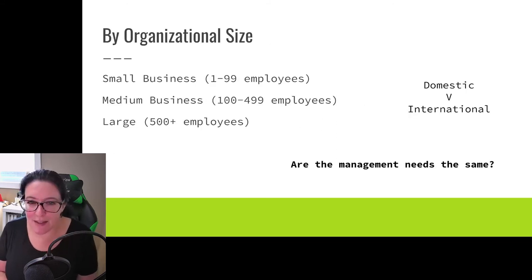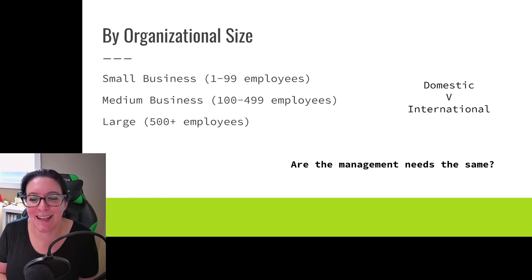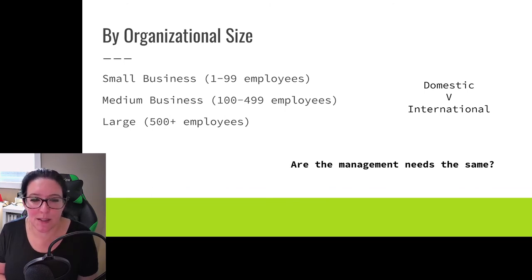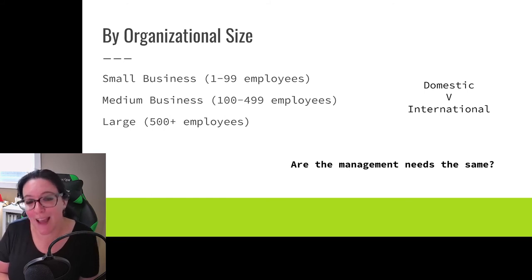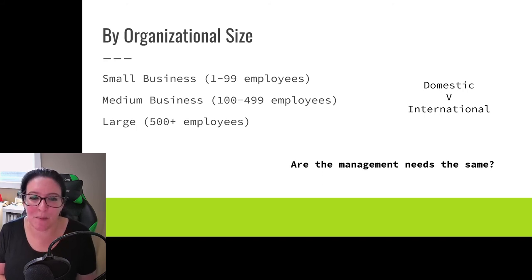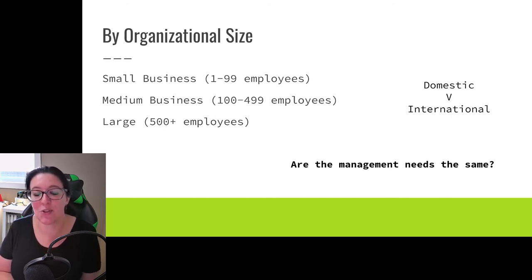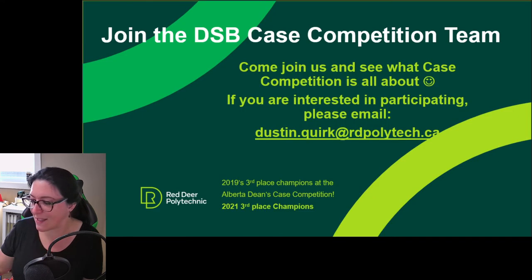We're also looking at the size of the organization: small businesses have less than 100 employees, and 98% of businesses in Canada are small businesses. A medium business is 100 to 499 employees and a large business is more than 500. We're located here in Alberta, and Alberta has the second highest number of businesses per capita — so we have lots of SMEs, small and medium enterprises. We are going to look this semester at the small and medium enterprise, and then also at large organizations and international organizations like Tim Hortons and Amazon. The question is: do they have the same management needs? We'll be investigating that this semester.